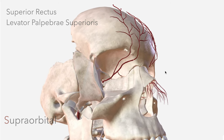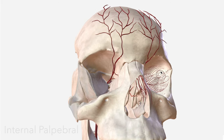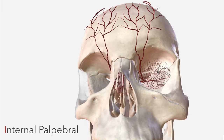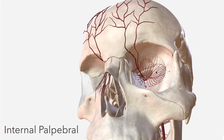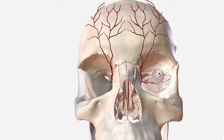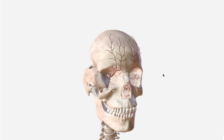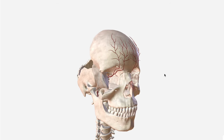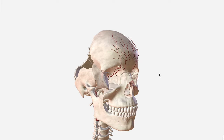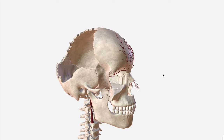We only have one artery left — that's the internal palpebral, which supplies the eyelid, and unfortunately isn't included in this model. That's it for the branches and the anatomy of the ophthalmic artery. I hope you've enjoyed this tour and we will see you in the next video.